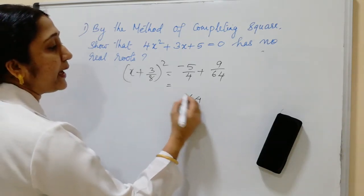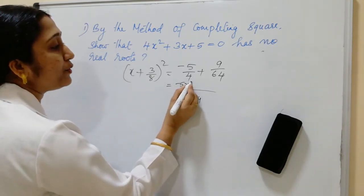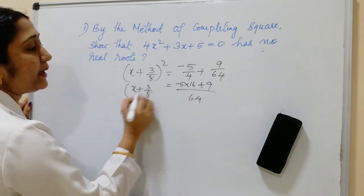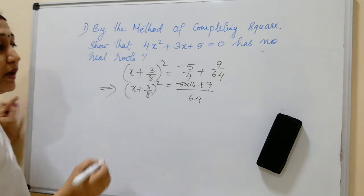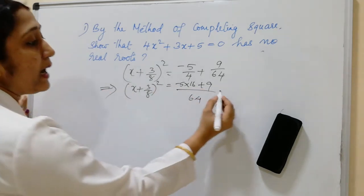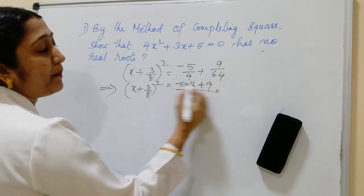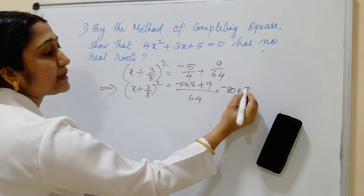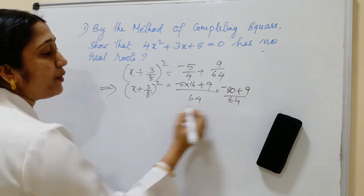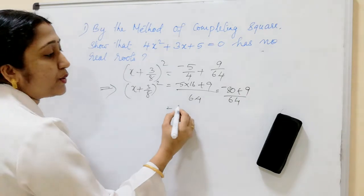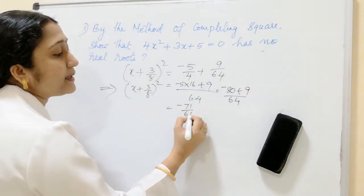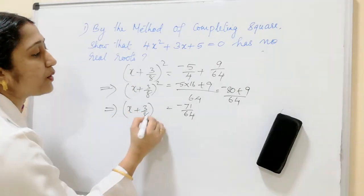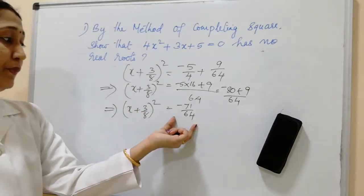The right side is a fraction, so we take LCM. The LCM is 64, giving (−5 × 16 + 9) / 64 = (−80 + 9) / 64 = −71/64. So (x + 3/8)² = −71/64.